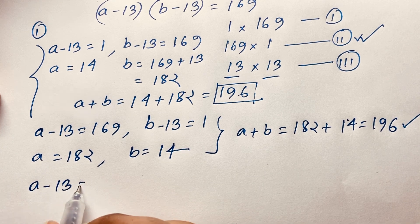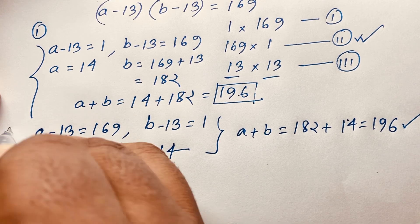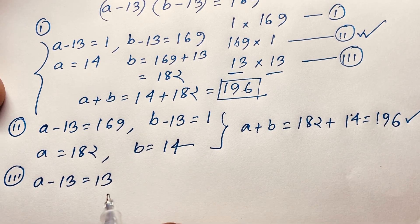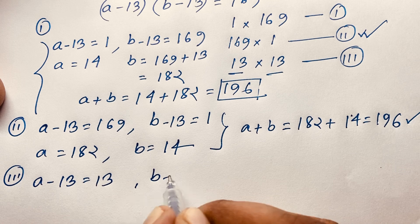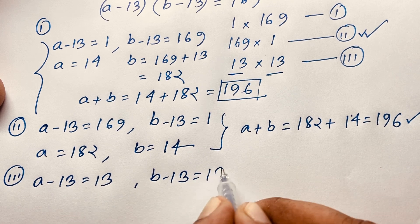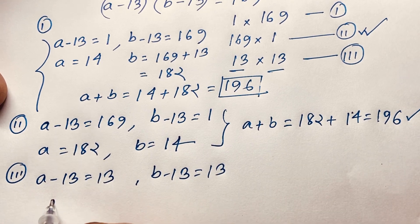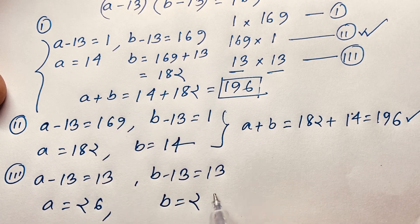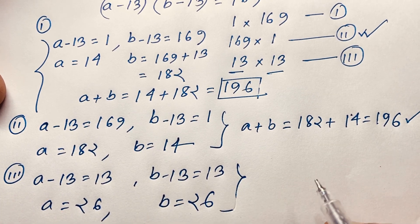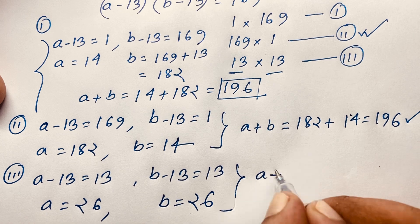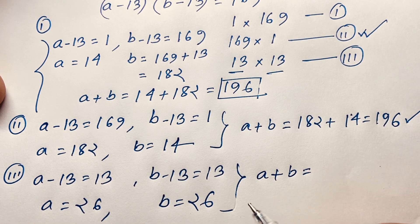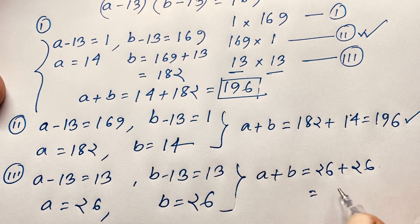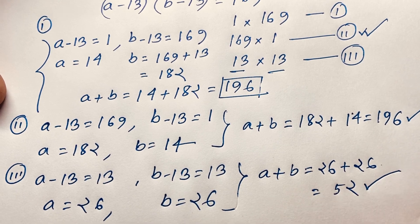Case 3: a minus 13 equals 13 and v minus 13 equals 13. So a equals 26 and v equals 26. Therefore a plus v equals 26 plus 26, which equals 52. This is our final answer for case 3.